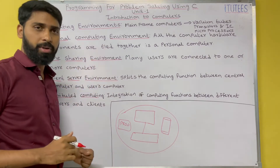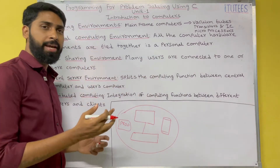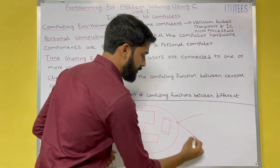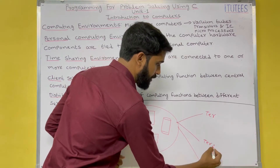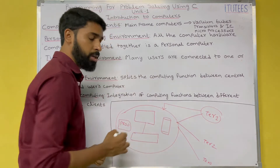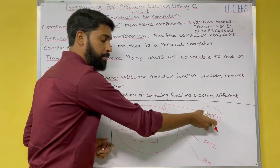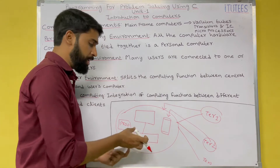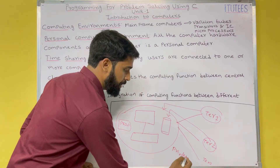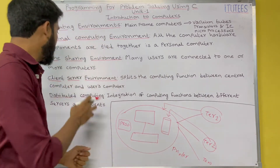Next is the time sharing environment. Time sharing environment means many users are connected to one or more computers — this is known as a time sharing setup. For example, there is a central computer connected with many terminals: terminal 1, terminal 2, and terminal 3. Terminal 1 can access the central computer, terminal 2 can access the central computer and use its resources. For example, there is a printer, and this printer is shared by all these terminals. This type of environment is called a time sharing environment.